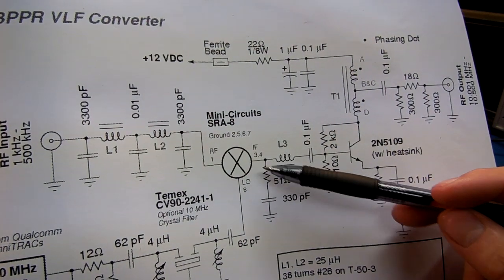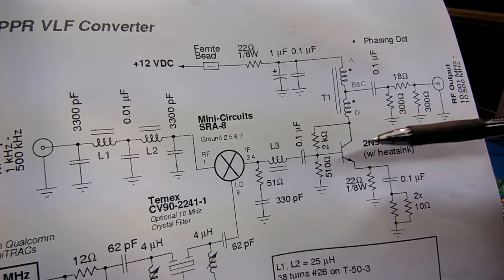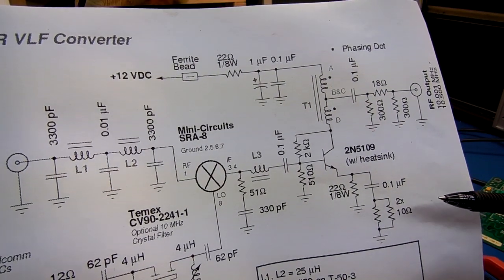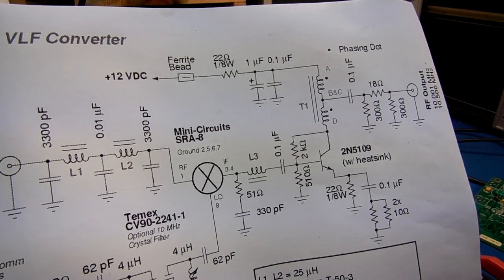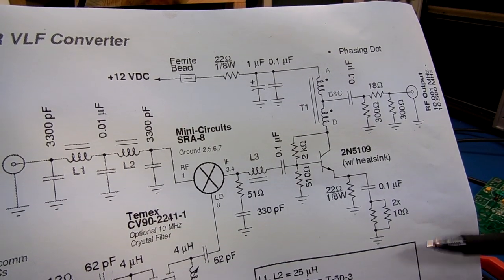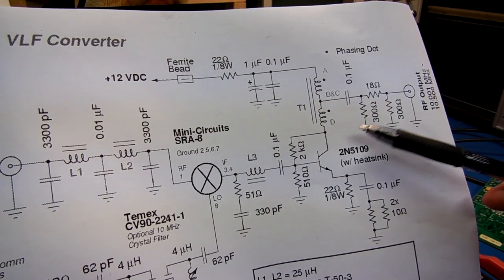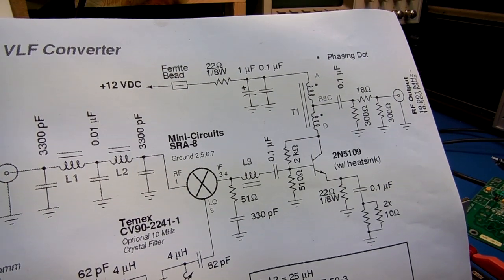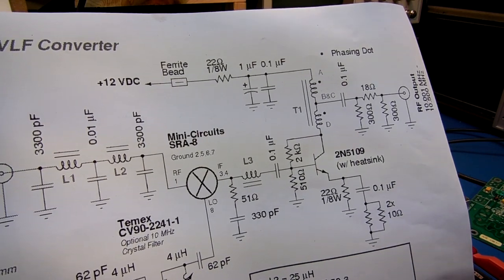On the IF output of the mixer, we have a little 20 dB or so amplifier, IF amplifier. This is a standard circuit. I took this straight from experimental methods in RF design. You'll see this circuit used a lot. It's very, very well debugged and it works, you know, perfect for this application.